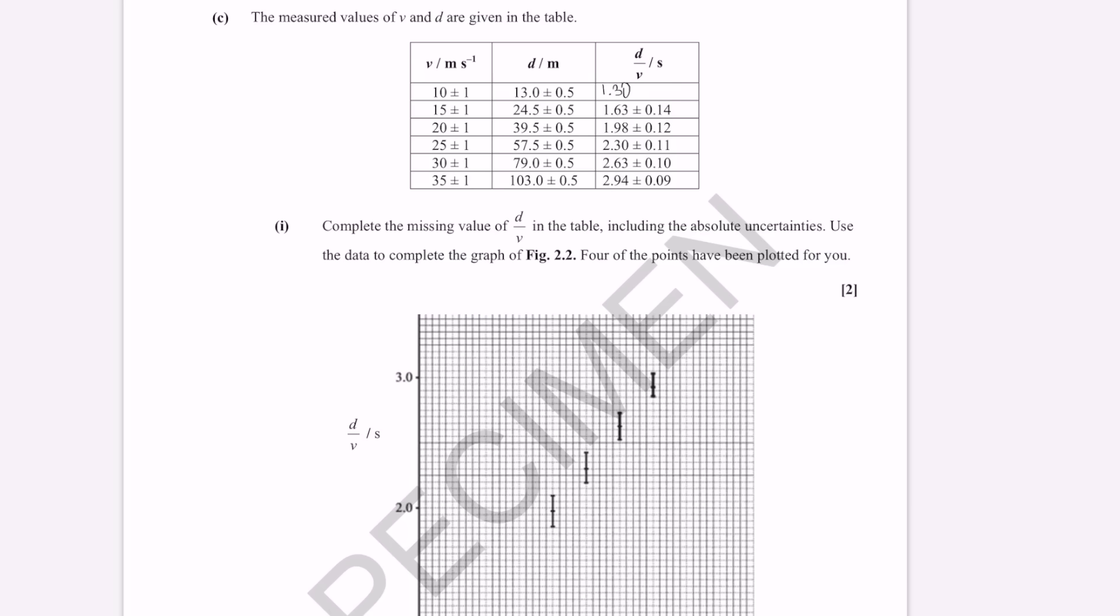Now, what will my uncertainty be? We actually need to calculate that. Because we are dividing quantities, what we need to do is add the percentage uncertainties. I'm going to do this just on the side here. The percentage uncertainty in d will be given by 0.5 over 13 plus the percentage uncertainty in v, which is going to be 1 over 10. Multiply this by 100. This gives us 0.13846 times by 100. I know I'm giving quite a lot of decimal places. Let's find this as a percentage, which is around 13%. So I'm just going to take this decimal value, 0.138, and then I'm going to multiply this by 1.3. And that gives us 0.18.